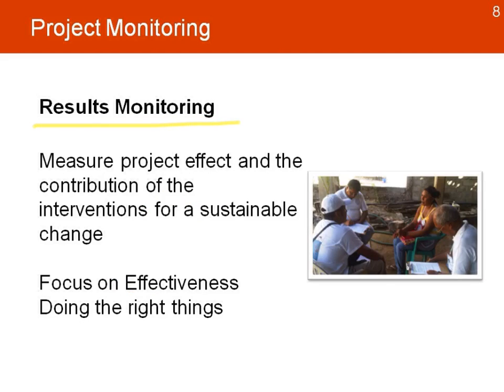Results monitoring looks at how we're going to measure the project effect and the contribution of the interventions for sustainable change. The focus is on effectiveness — doing the right things — and what we want to make sure is that the project is achieving the results it needs to within the time and budget available.